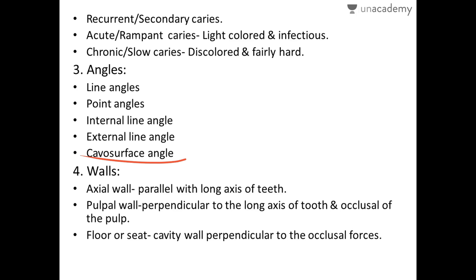Regarding walls: the axial wall is always parallel to the long axis of the tooth. In a Class 1 cavity preparation, the facial, lingual, mesial, and distal walls are the axial walls. In Class 2 cavities, in addition to those four walls, the gingival wall of the proximal box — also parallel to the long axis — is also an axial wall. This can vary depending on the type of tooth preparation.